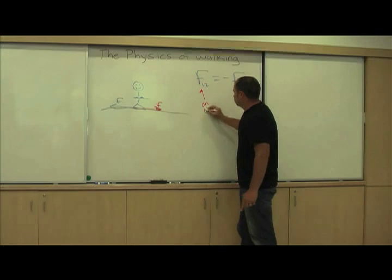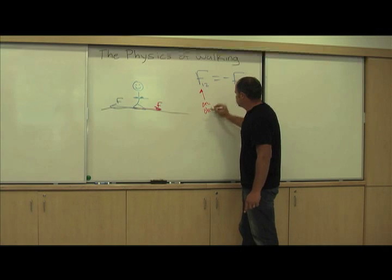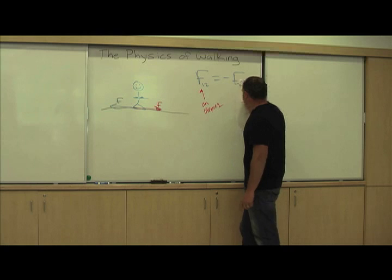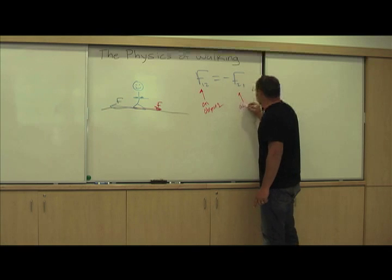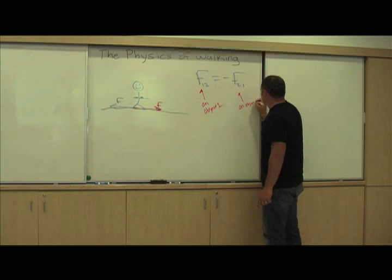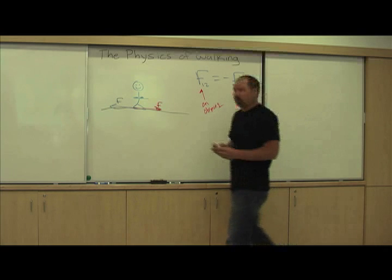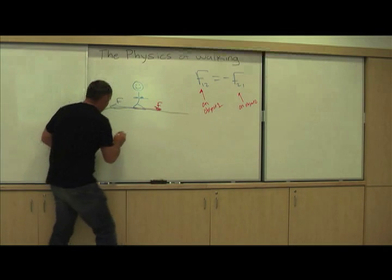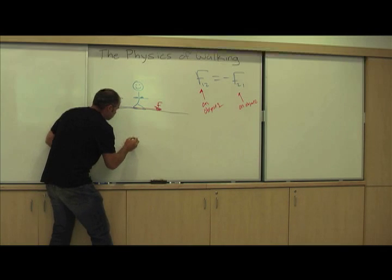So on object one. And this one is on object two. Therefore, if I draw my free body diagram, it looks like this.